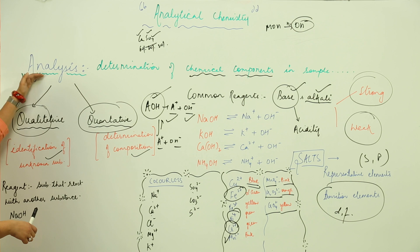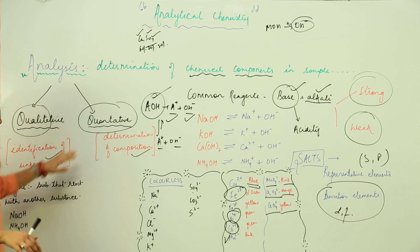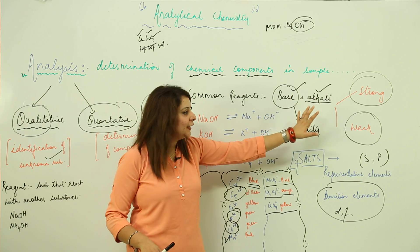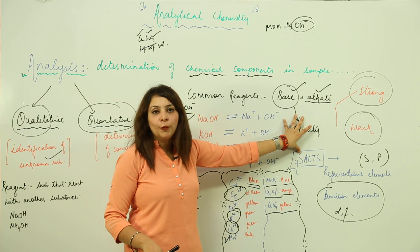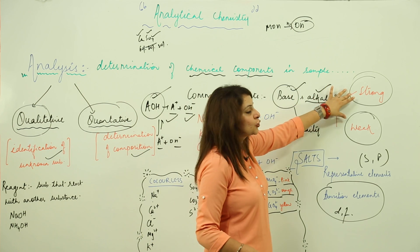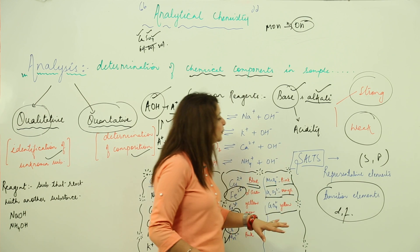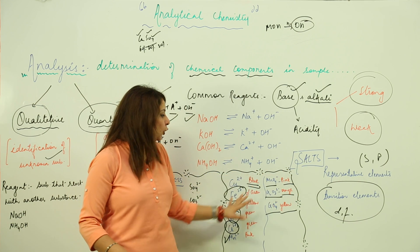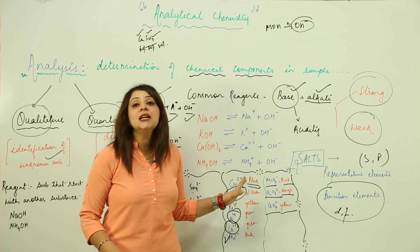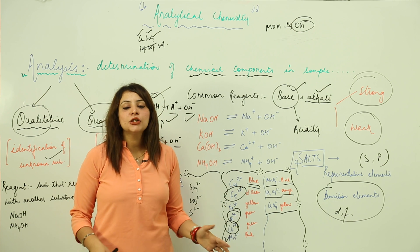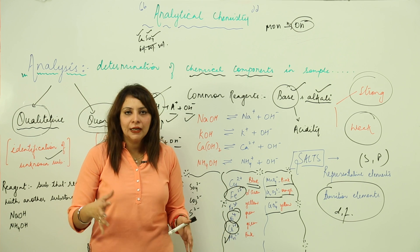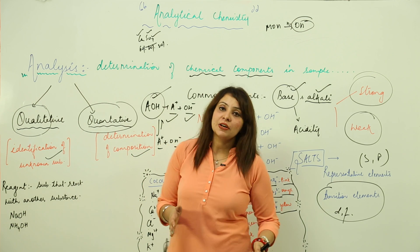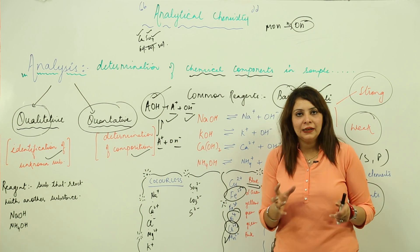To recap: analysis involves qualitative and quantitative types; reagents are clear; common reagents are bases and alkalis; we covered acidity and basicity, strong and weak bases, and the colors of salts. The salts of representative elements are colorless, while the salts of transition elements are generally colored in nature.